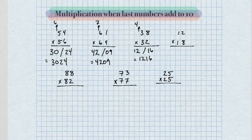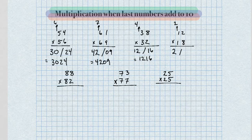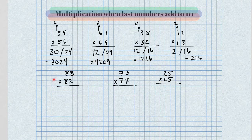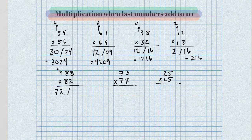Next problem — the next number up from 1 is 2. So for the left-hand side we get 2, and the right-hand side is 16. So our answer is 216. Next problem, 88 times 82 — the next number up from 8 is 9. So for the left-hand side we get 72, and the right-hand side is 16. Our answer is 7,216.